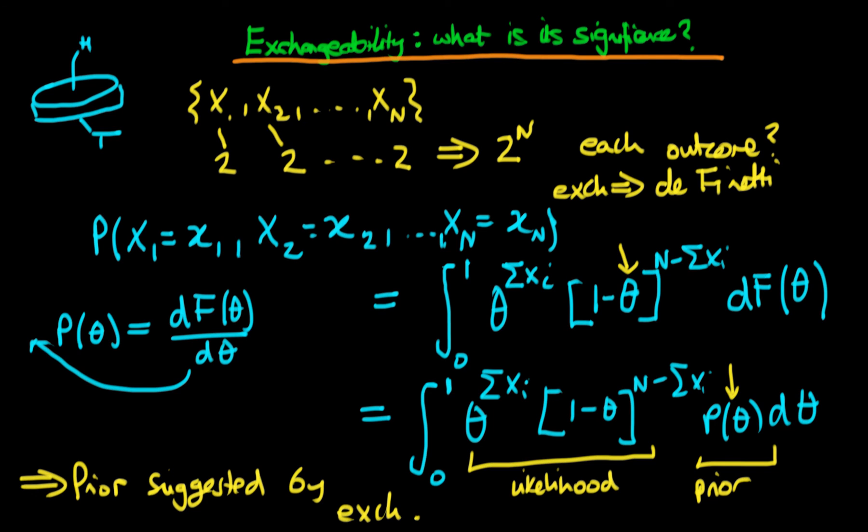So as it turns out, exchangeability actually does suggest some method behind the Bayesian inference process.